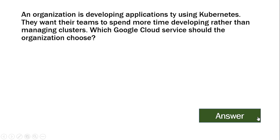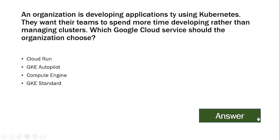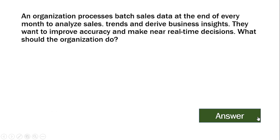An organization is developing an application using Kubernetes. They want their team to spend more time developing rather than managing clusters. Which Google Cloud service should the organization choose? The options are Cloud Run, GKE Autopilot, Compute Engine, or GKE Standard. The answer is GKE Autopilot.